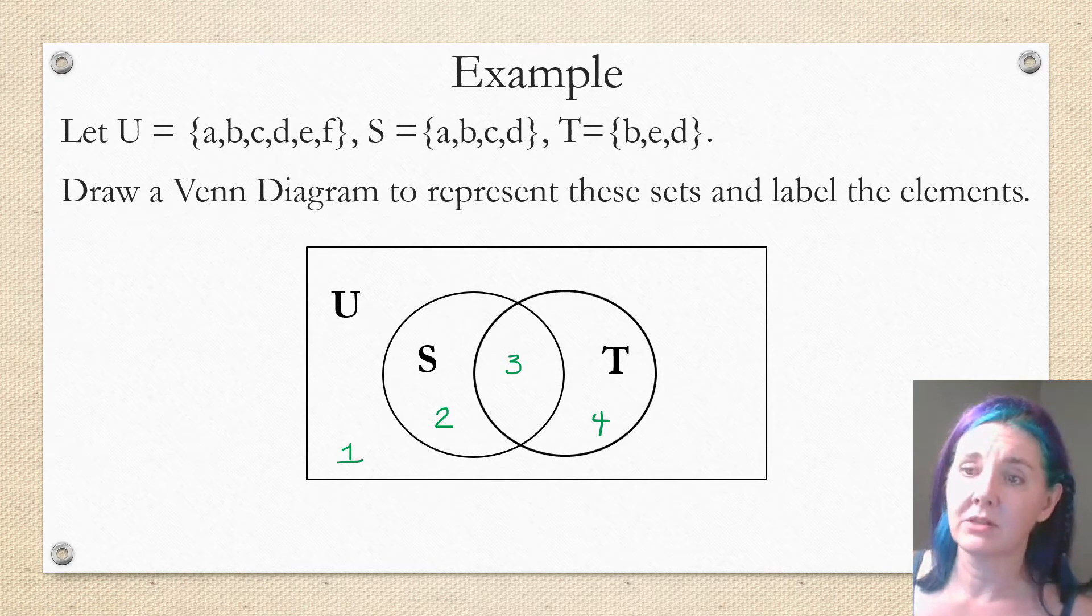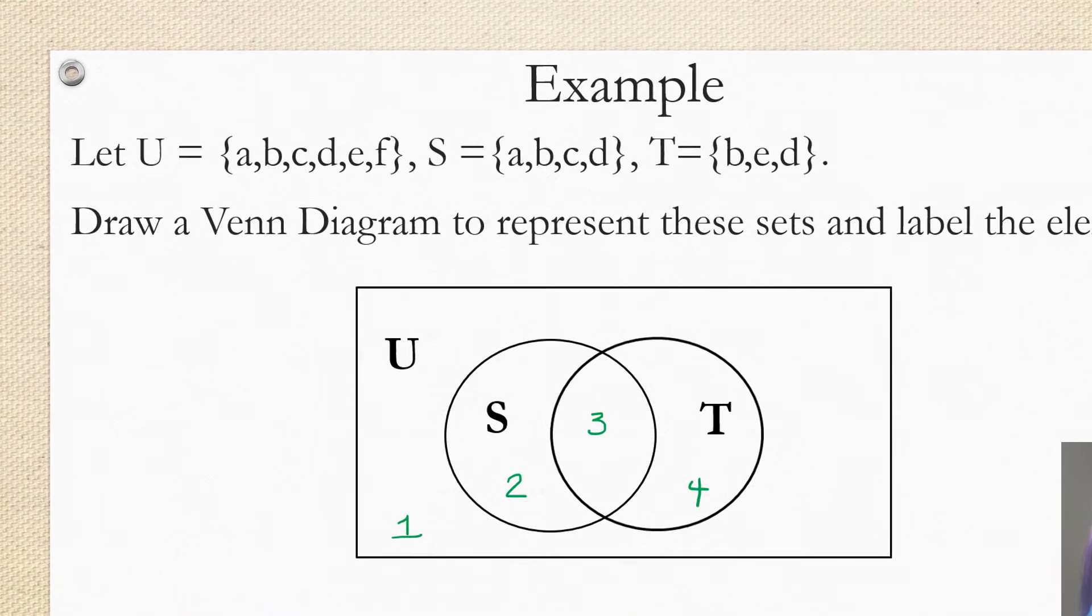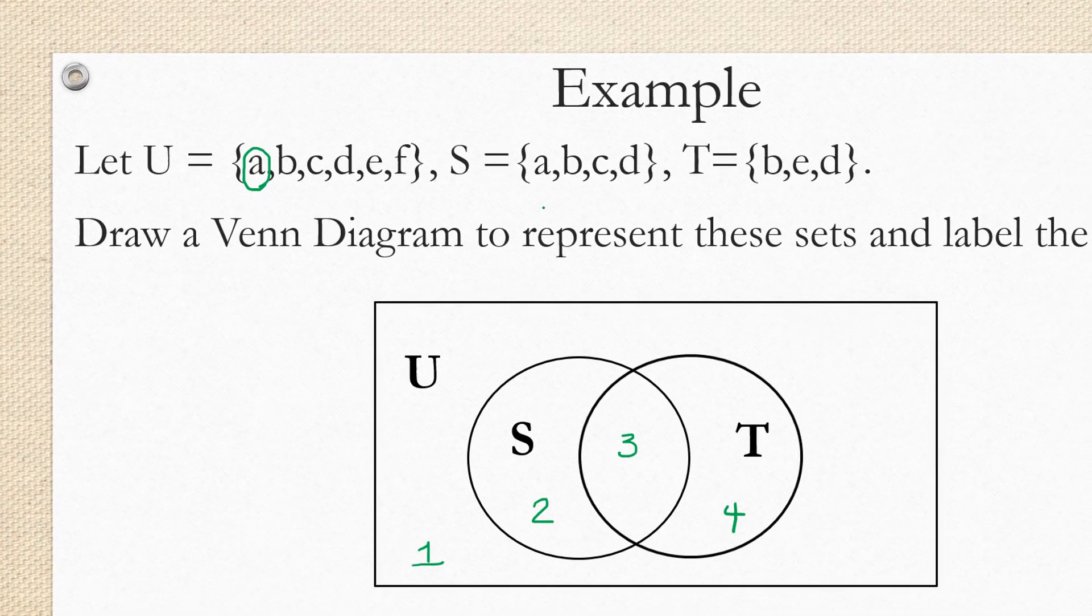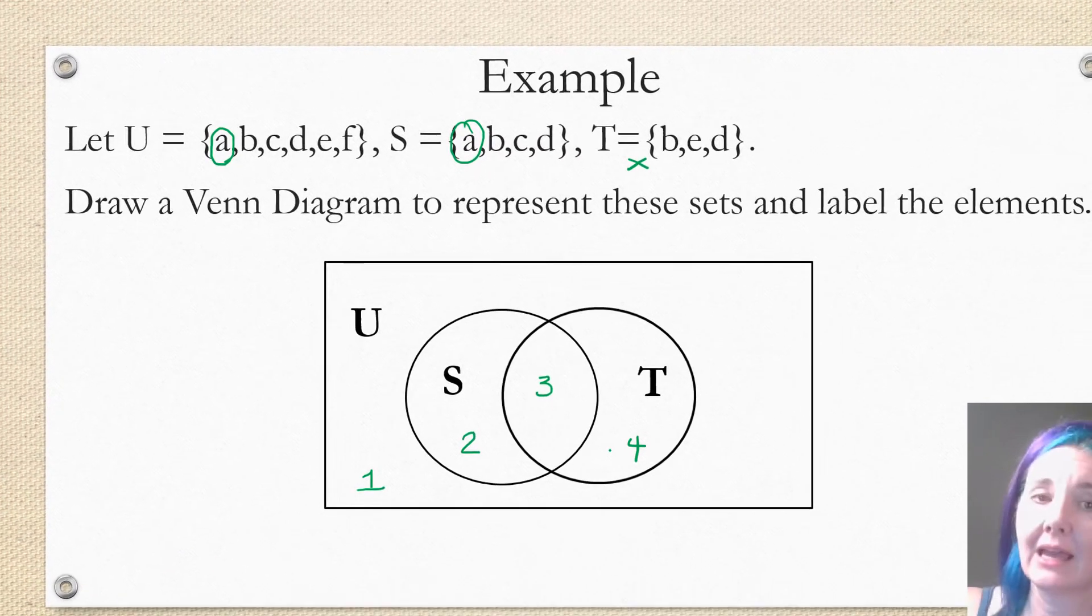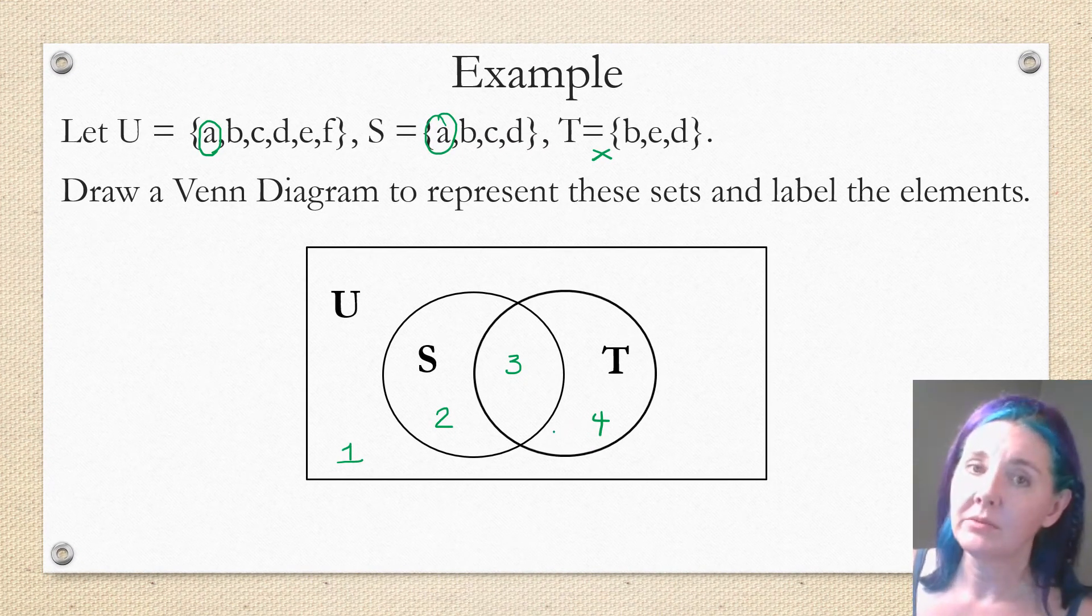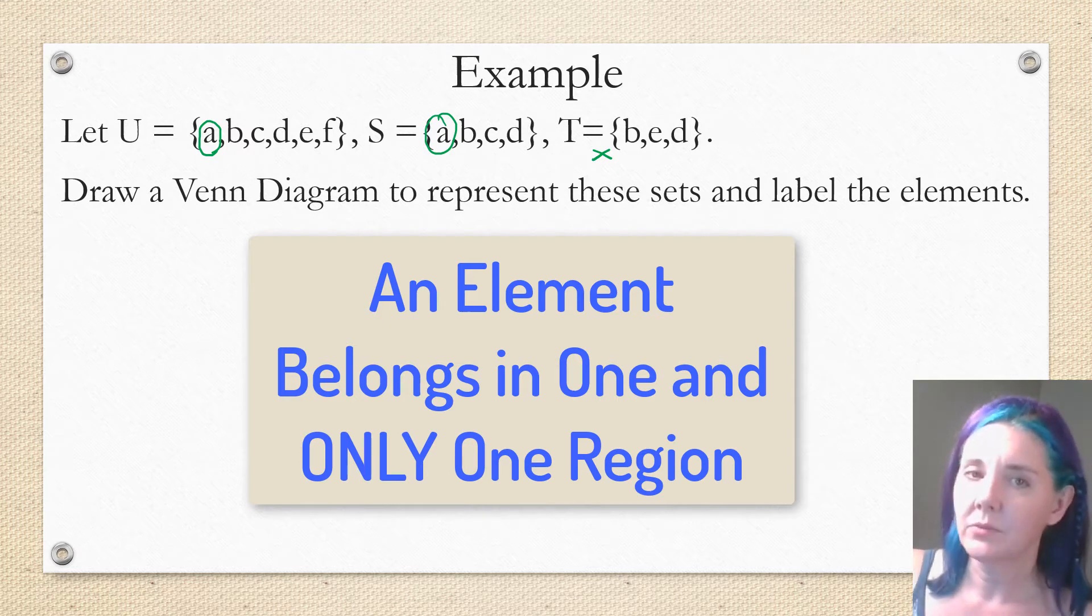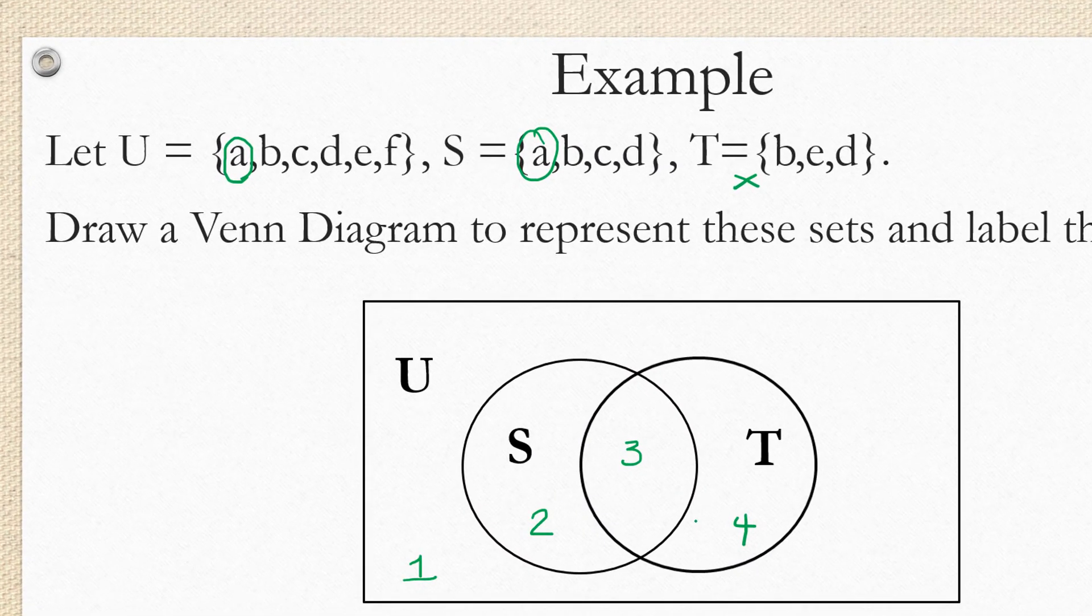So let's take a look at the elements we have starting with the element A. A is in the universal set, as all of the elements are. It's in set S, but it's not in set T. So when we decide where to place A, keep in mind that you can only place elements in one region. An element cannot appear twice on the same Venn diagram. There is exactly one correct region to put each element into. So in this case, A has the characteristic that it's in the set S, but it's not in the set T.